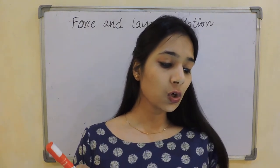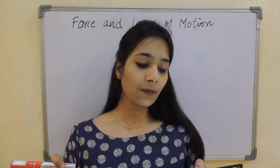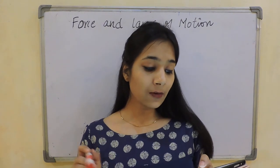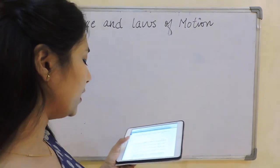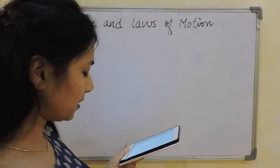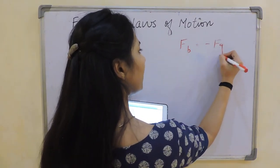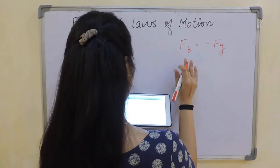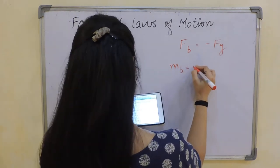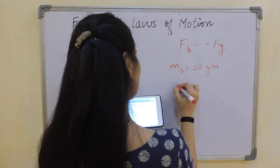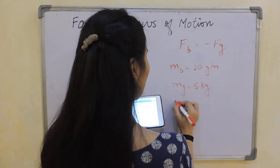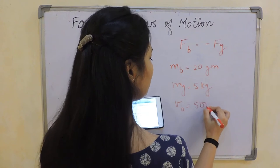Next question: a 20 gram bullet is shot from a 5 kg gun with a velocity of 500 meter per second. What is the speed of the recoil of the gun? We have mass of the bullet = 20 grams, mass of the gun = 5 kg, and velocity of the bullet = 500 meter per second. We need to find the velocity of the gun.